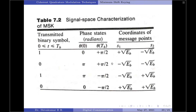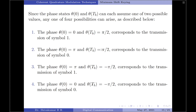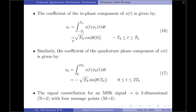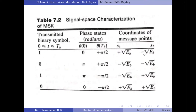A table summarizes the values of θ(0) and θ(T_B) with corresponding values of s₁ and s₂ calculated over the intervals −T_B to +T_B and 0 to 2T_B. For θ(0) = 0 and θ(T_B) = +π/2: s₁ = sqrt(E_b)·cos(0) = sqrt(E_b) and s₂ = −sqrt(E_b)·sin(π/2) = −sqrt(E_b), corresponding to transmitted symbol 1. The remaining combinations can be computed similarly.